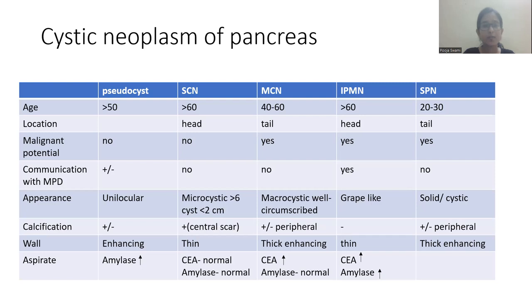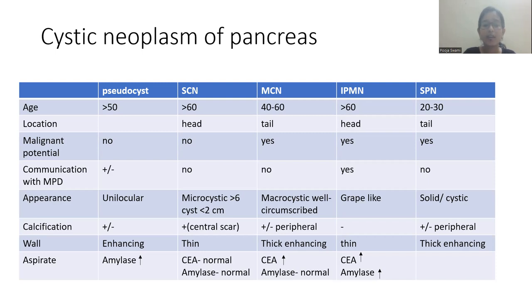Cystic neoplasms of the pancreas include pseudocysts, seen in patients over 50 years of age, with no malignant potential, possible communication with the main pancreatic duct, unilocular appearance, possible calcification, enhancing wall, and increased amylase on aspirate. Serous cystic neoplasm is usually seen in elderly patients over 60 years, commonly located in the head. It does not convert to malignancy, has no communication with the main pancreatic duct, and appears microcystic with more than 6 cystic lesions each less than 2 cm, a central calcified scar, thin wall, and normal carcinoembryonic antigen and amylase on aspirate.